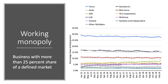Working monopoly is any business with more than 25% share of a defined market. An evaluation point: monopoly power depends on how you define the market. If we take the food grocery sector in the UK, right up to the end of March 2019, Tesco still has a working monopoly — it is the biggest firm in the industry. Asda and Sainsbury's hoped to merge, and we also see the rise of the deep discounters Aldi and Lidl increasingly taking market share from the big players.